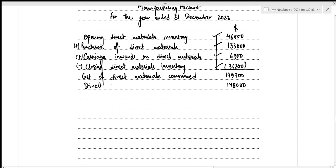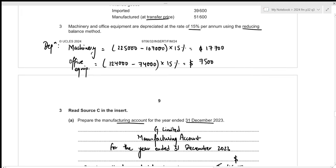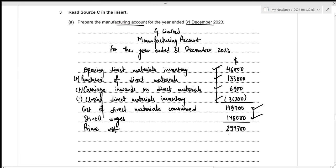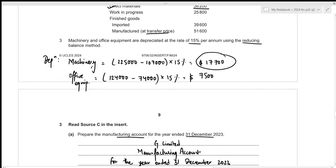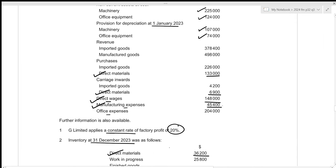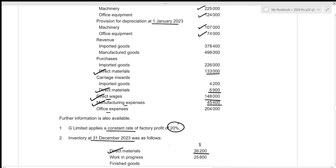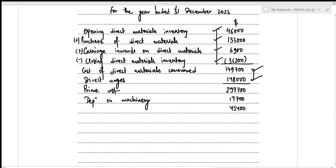Now we add any other direct costs to calculate the prime cost. The only other direct cost is direct wages of 148,000. So prime cost is 149,700 plus 148,000, which results in 297,700. Now we add the factory overheads. The first factory overhead is depreciation on machinery of 17,700, followed by manufacturing expenses of 45,400. The total of prime cost and factory overheads is 297,700 plus 17,700 plus 45,400, which results in 360,800.